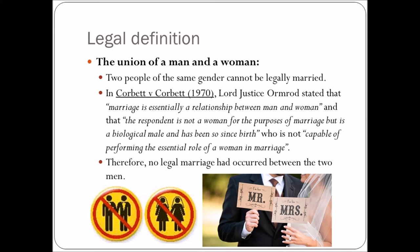A student asked about the case naming convention — why both parties share the surname Corbett. In this case, one Corbett wanted the divorce and the other did not, so they had to go to court. The judge actually said you cannot get a divorce because you were never married in the first place, effectively annulling the marriage, since it was not a union between a man and a woman.